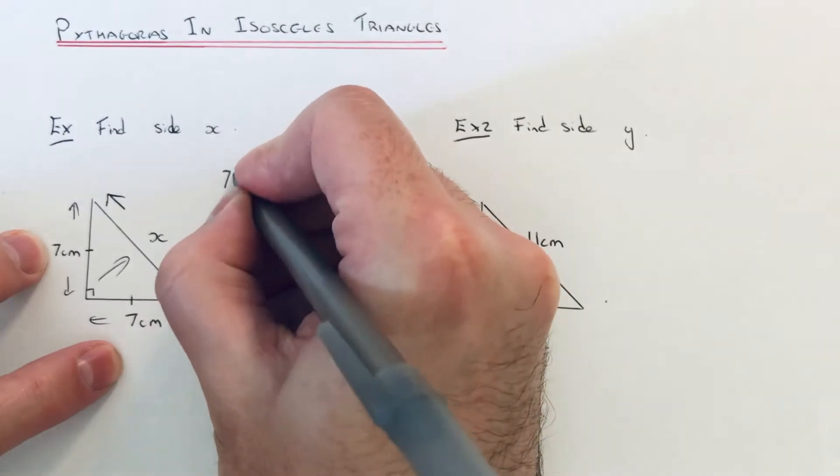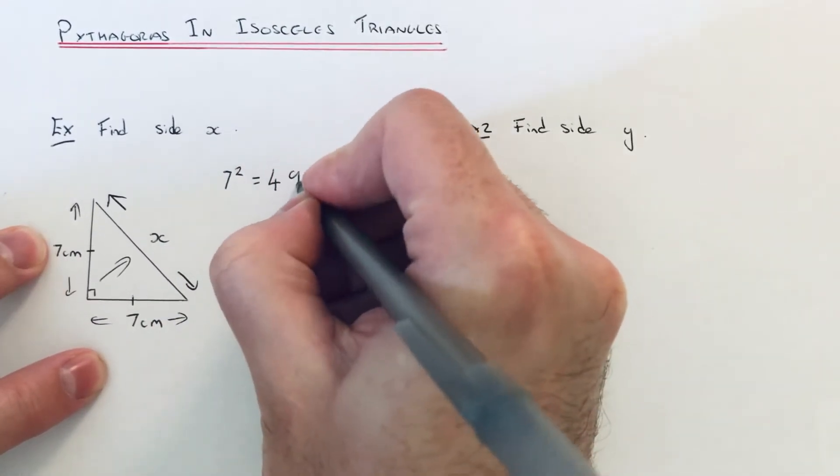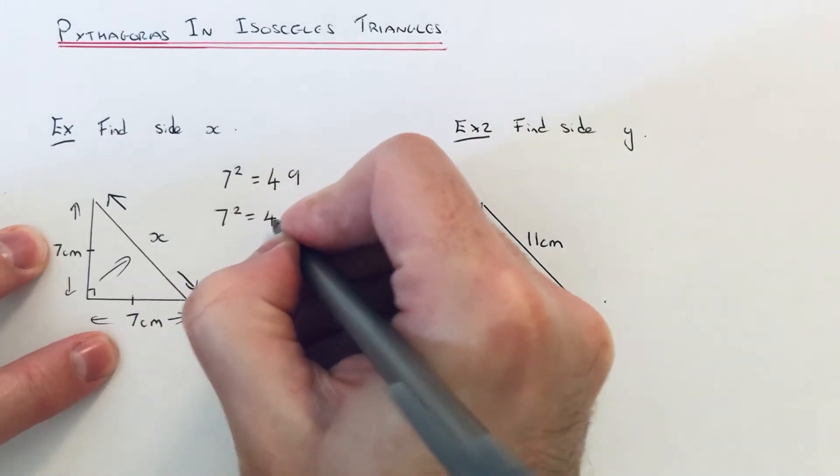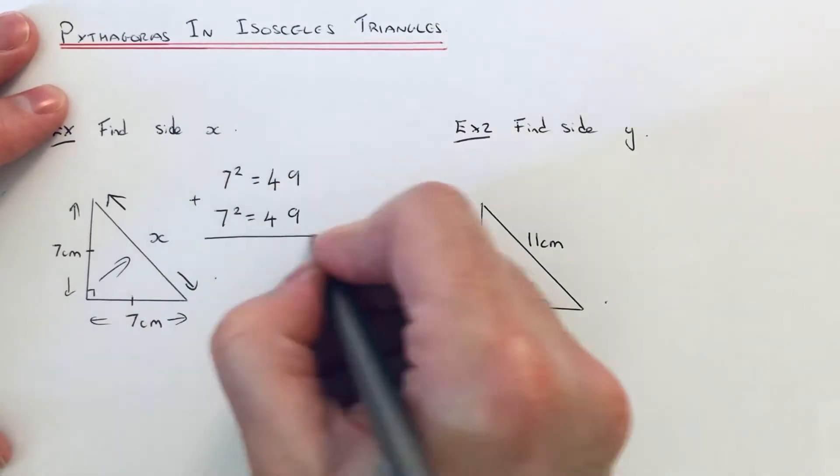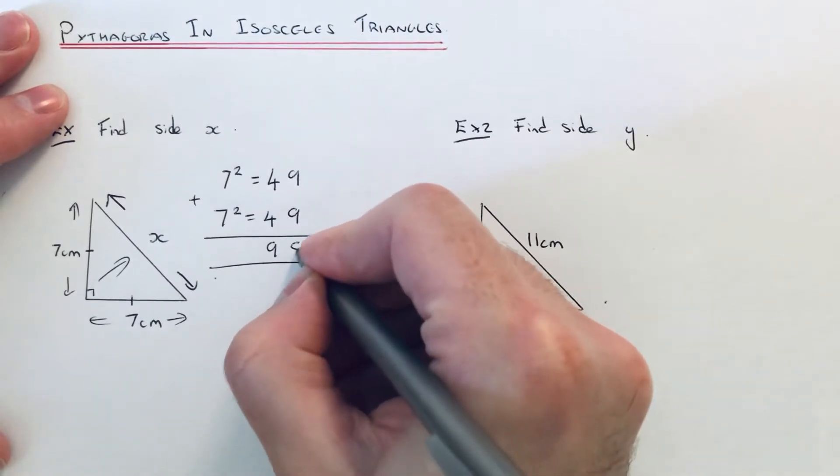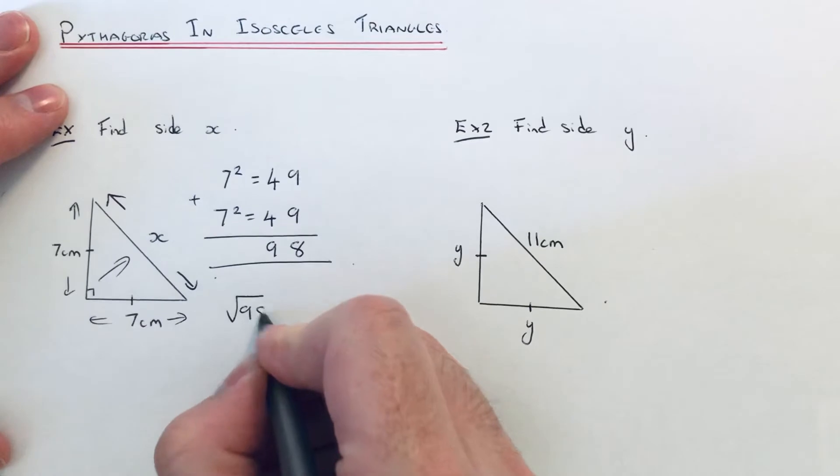First step is to square the sides that we've got. Seven squared is 49. The other side is also seven, so seven squared is also 49. We can then add these together, so 49 add 49 is 98, and then our final step is to square root 98.